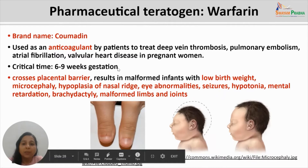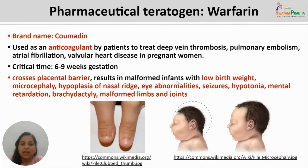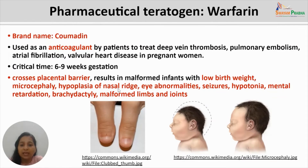Other abnormalities caused by warfarin include hypoplasia of the nasal bridge, eye abnormalities, seizures in the child's lifetime, hypertonia, mental retardation, brachydactyly, malformed limbs and joints, and effects at the extremities. A common feature is the clubbed thumb, where the tip of the finger and nail are quite small. This is a common feature seen when the mother is exposed to warfarin during pregnancy.